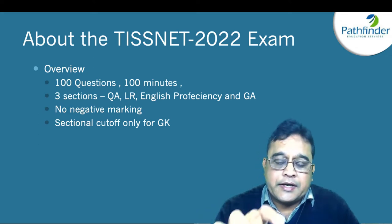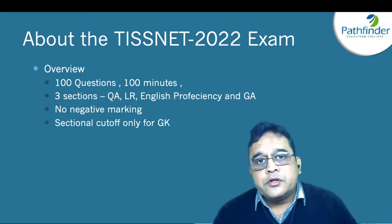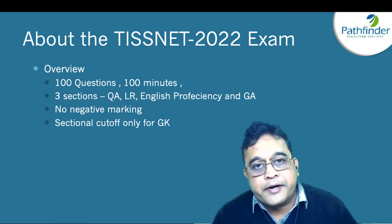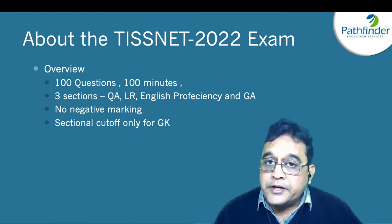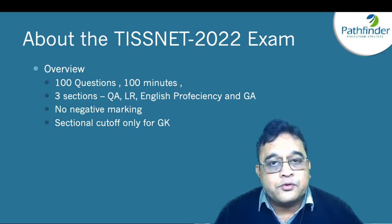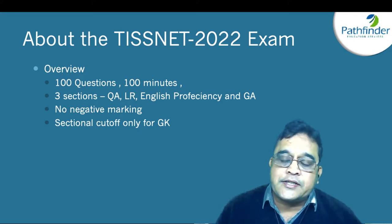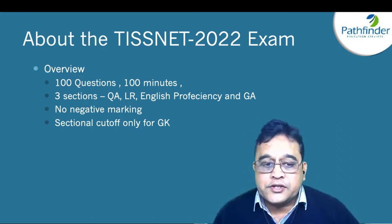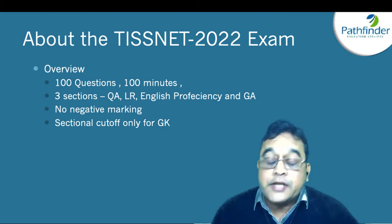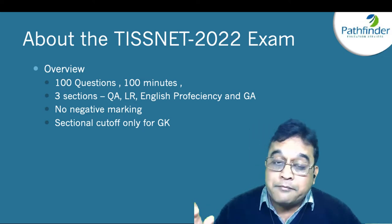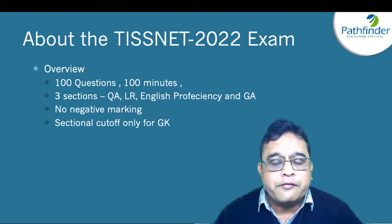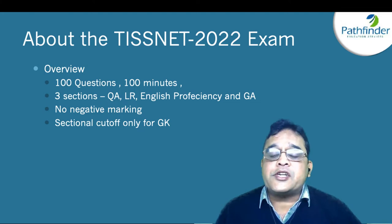The TISnet exam will have 100 questions to solve in 100 minutes — that is one hour and 40 minutes. There are three sections: quantitative aptitude and logical reasoning form one section, English proficiency is the second, and general awareness is the third. The first two sections have 30 questions each and the general awareness section has 40 questions. There is no negative marking, and there are sectional marks only for the general awareness section.